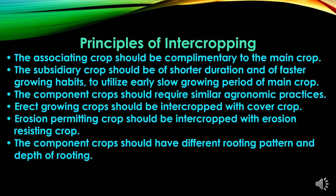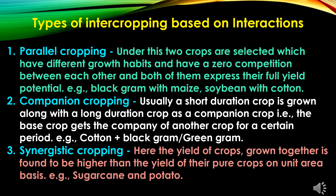Types of intercropping based on interactions: the first is parallel cropping, under which two crops are selected that have different growth habits and zero competition between each other, and both express their full yield potential, like black gram with maize and soybean with cotton.